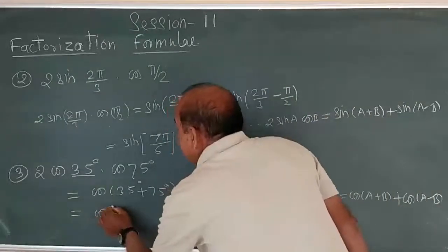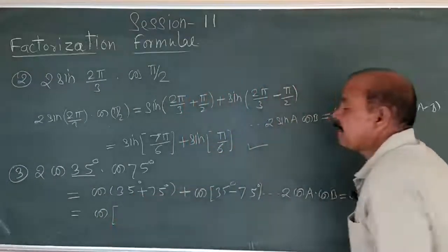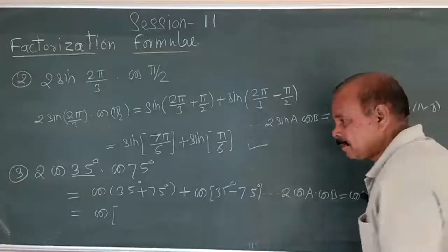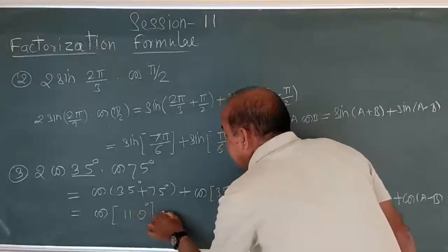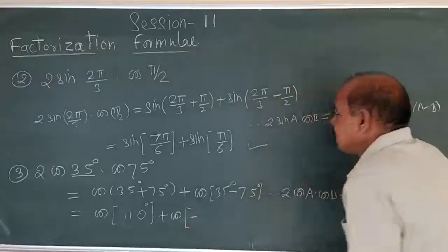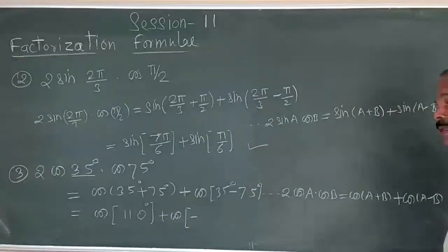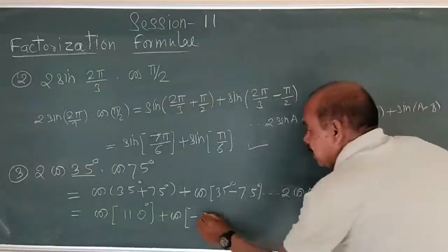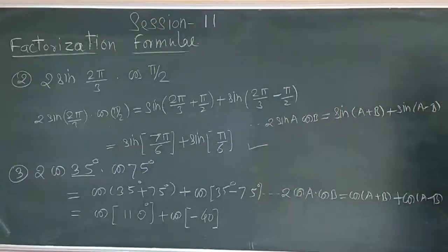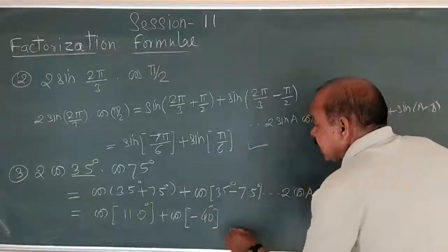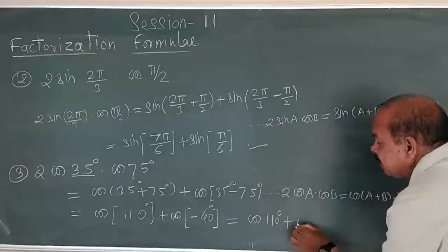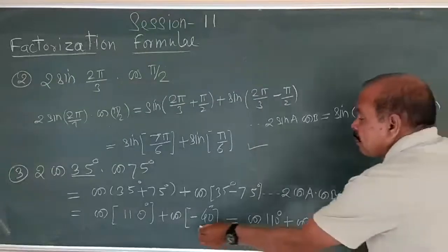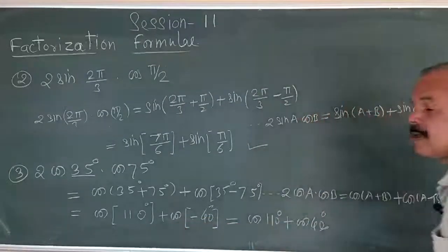And that equals cos of 35 plus 75, which is 110, plus cos of 35 minus 75, which is minus 40. But since cosine has no effect of a negative sign, cos of minus 40 equals cos of 40. So the answer is cos of 110 plus cos of 40, because there is no effect of negative sign on the cosine function.